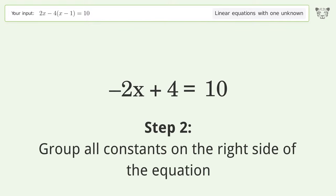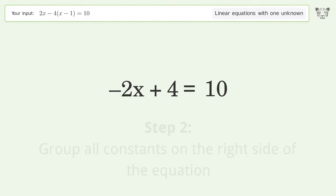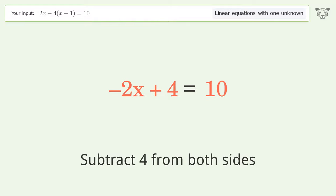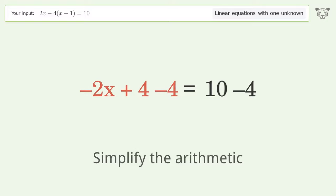Group all constants on the right side of the equation. Subtract 4 from both sides. Simplify the arithmetic.